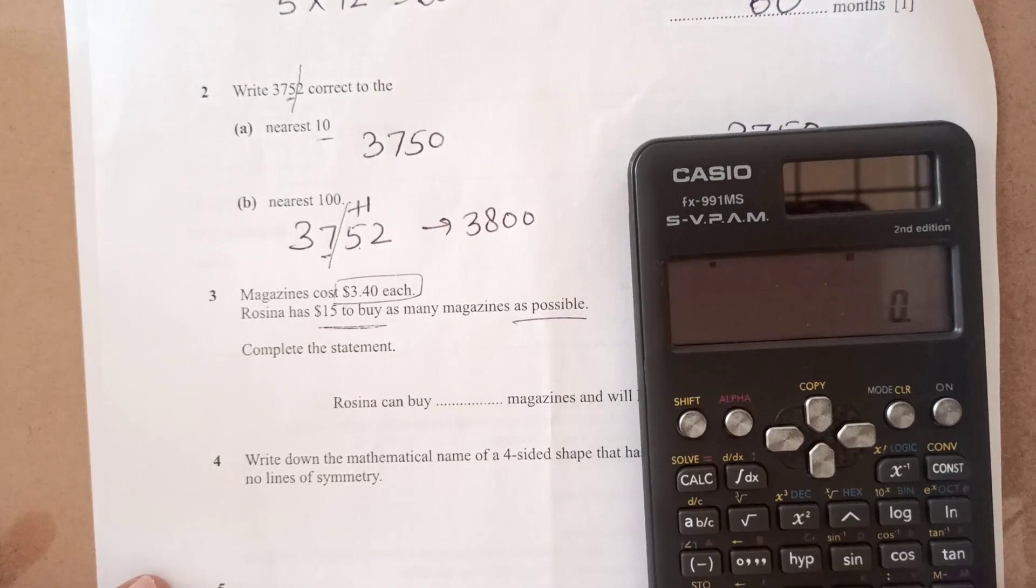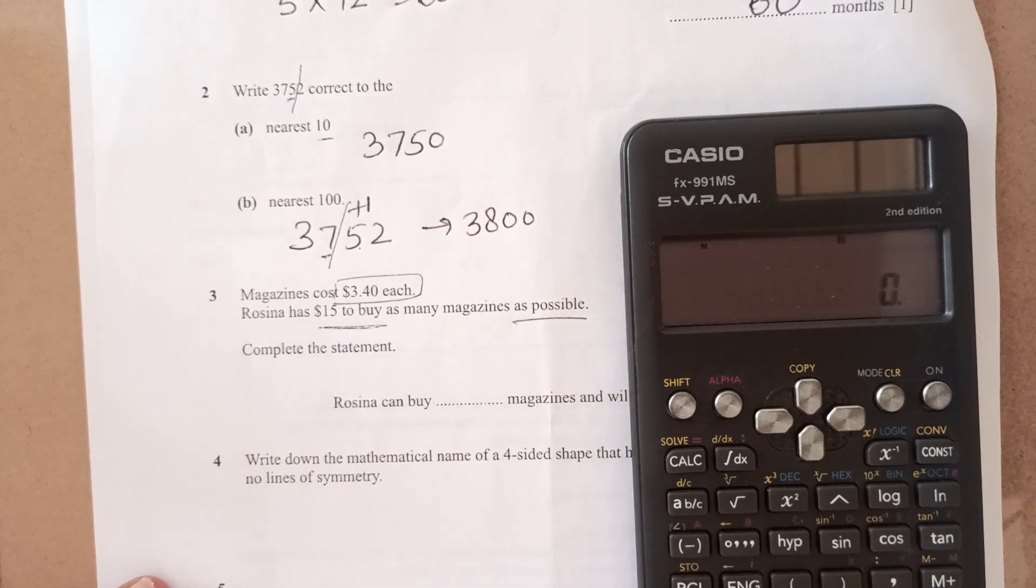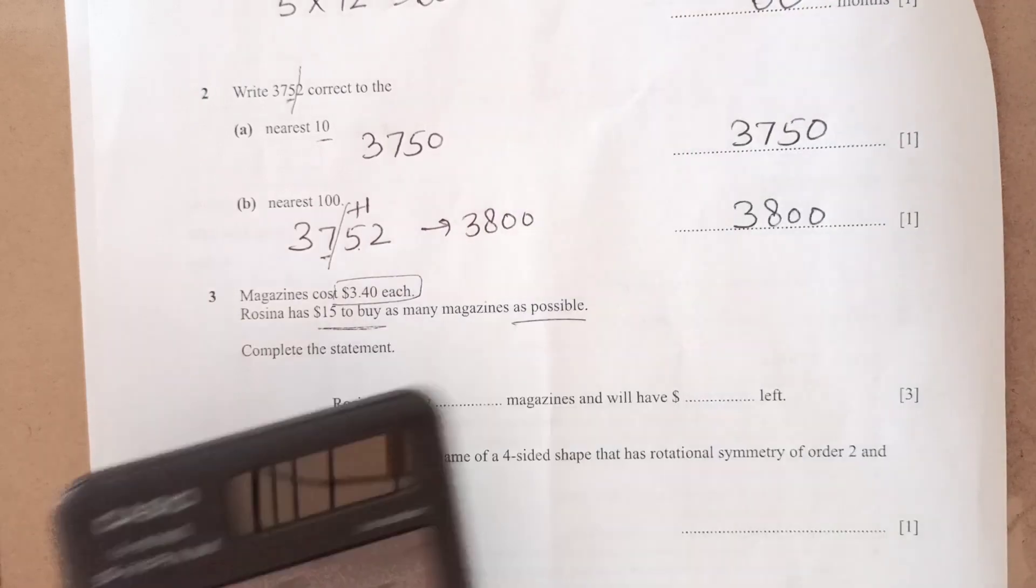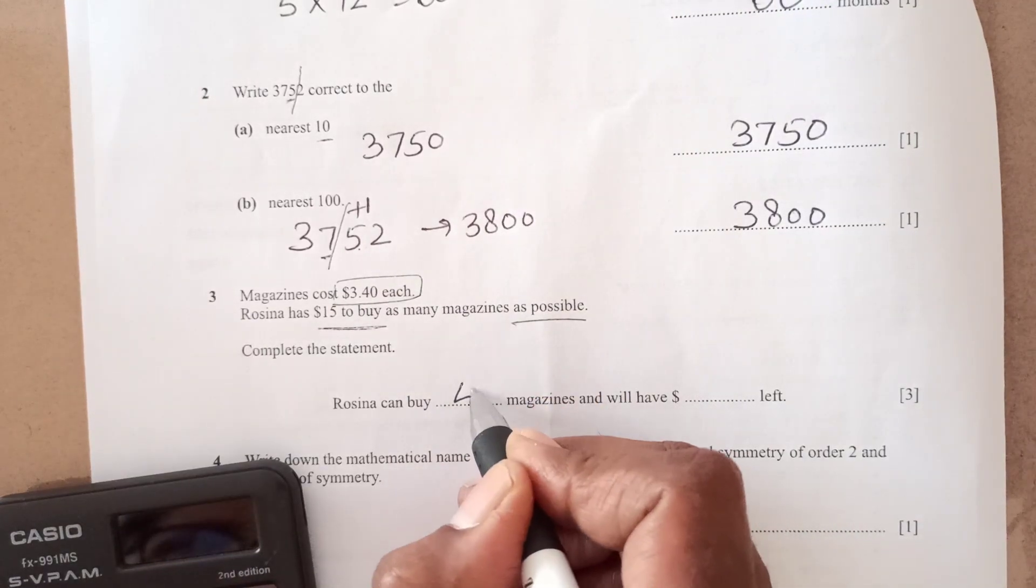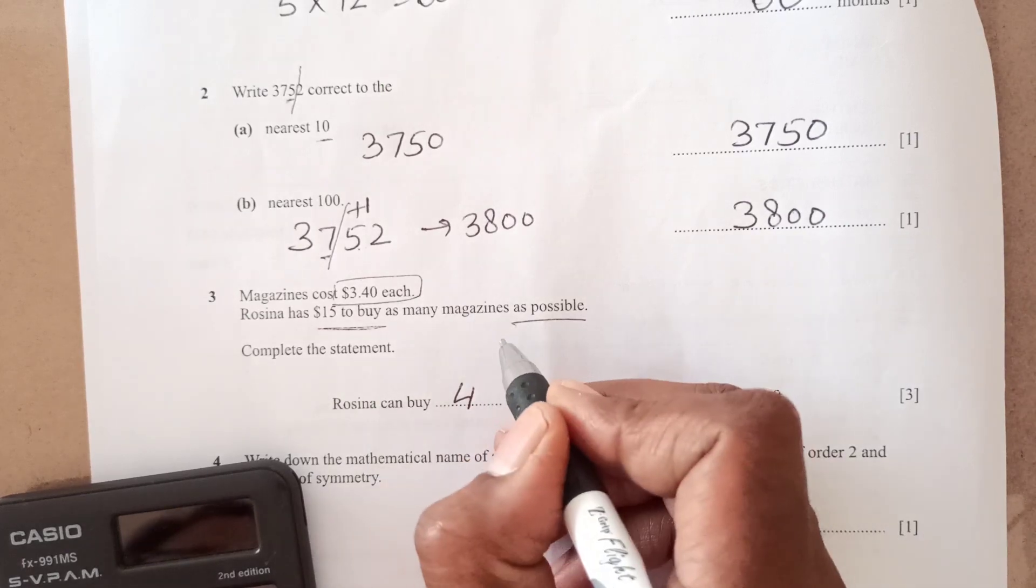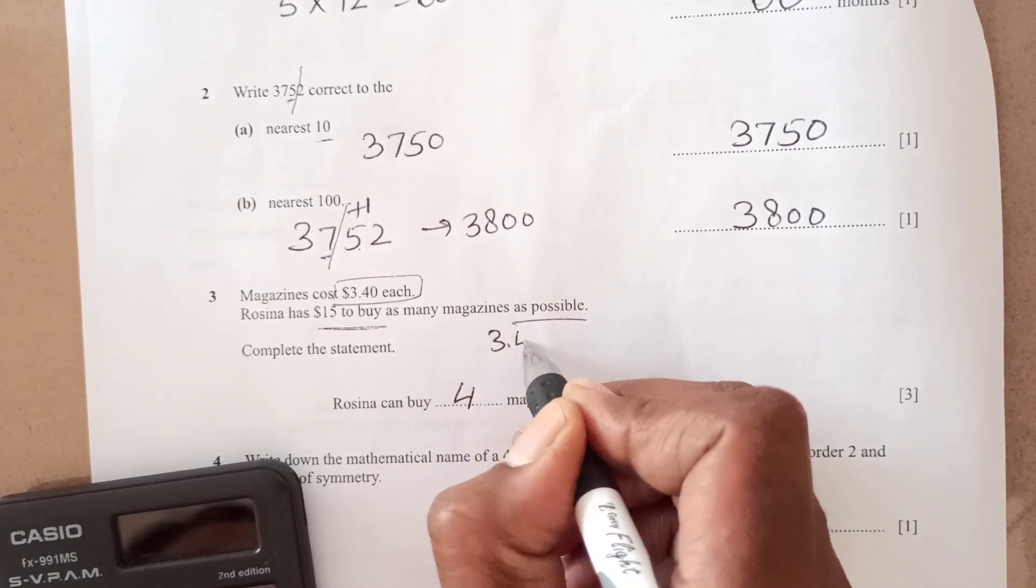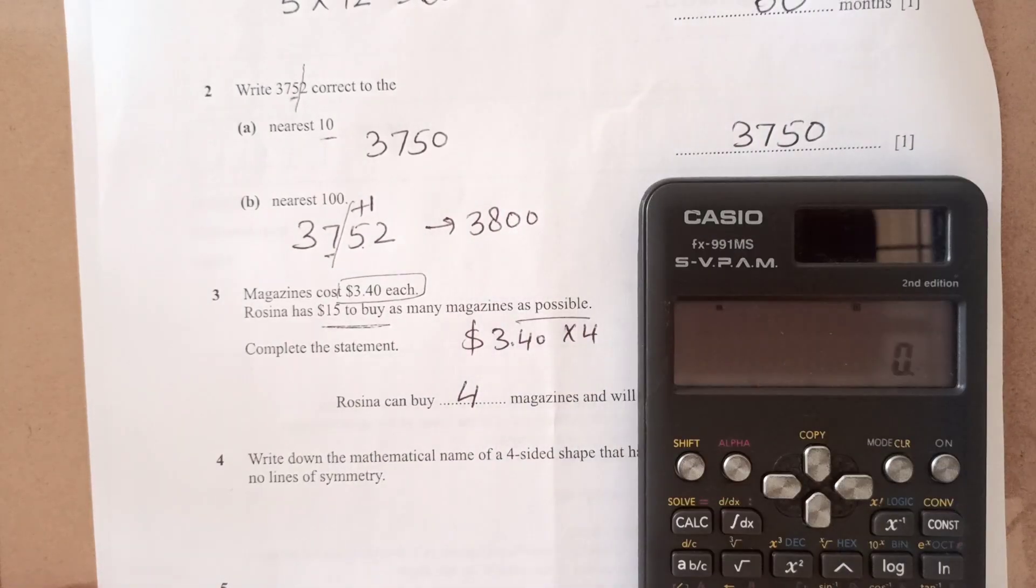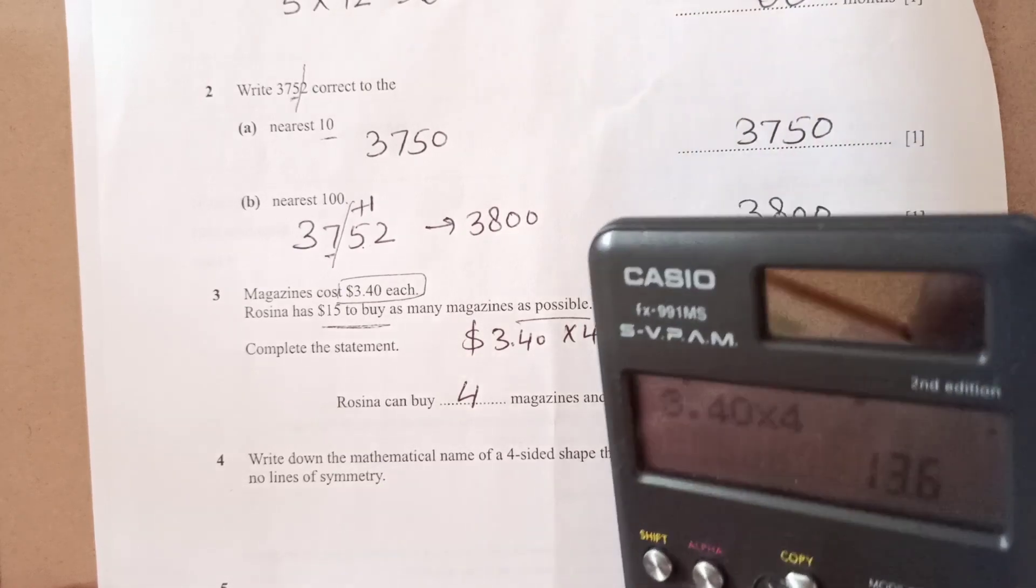We can easily use calculator for that. She has 15, so she has total $15. So $15 divided by 3.40. That means she can buy 4. You see the 4 point something. So as whole she can buy 4 magazine and then we will see the cost 3.40 is the cost of 1 times 4. So now 3.40 times 4, it is 13.6.